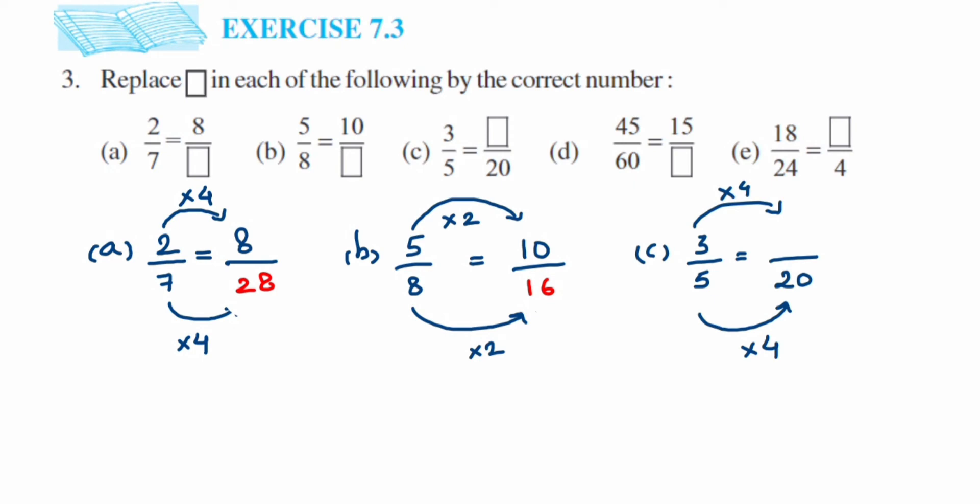For the fourth question, 45 upon 60 is equal to 15 upon dash. Now if you see here, 45 got reduced to 15, means we are dividing here. You have to divide with 3. When you divide 45 with 3 you get answer 15, so same 3 you divide with 60, you get the answer 20. So the answer for the fourth question will be 20.